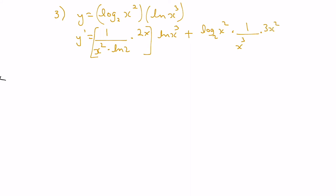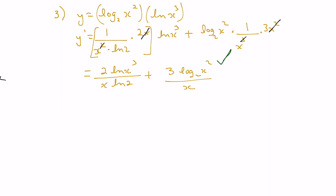Let's clean this up. Factoring out x terms and simplifying, the result is 2 ln x cubed over x ln 2, plus 3 log base 2 of x squared all over x. That could be our final answer.